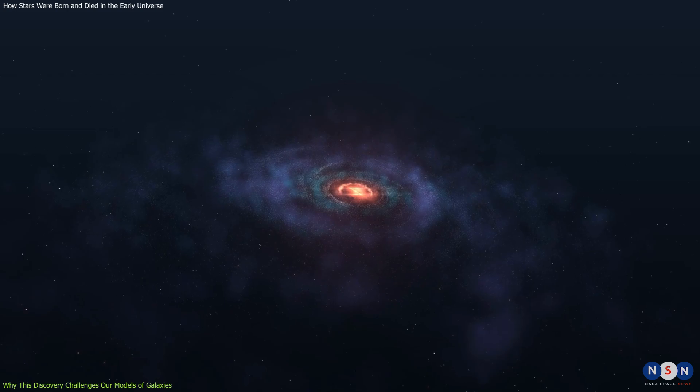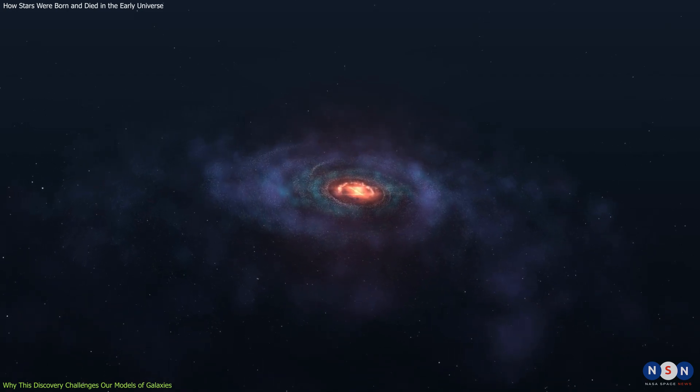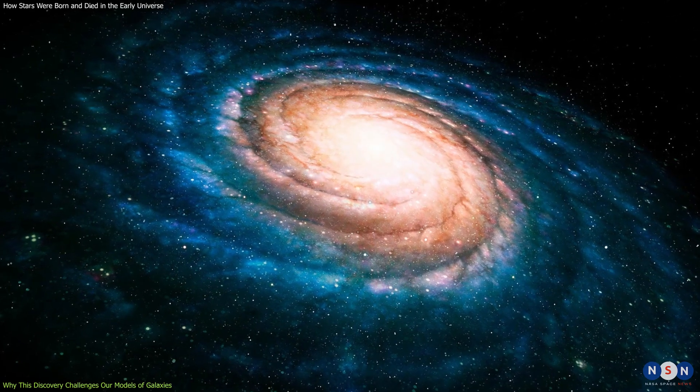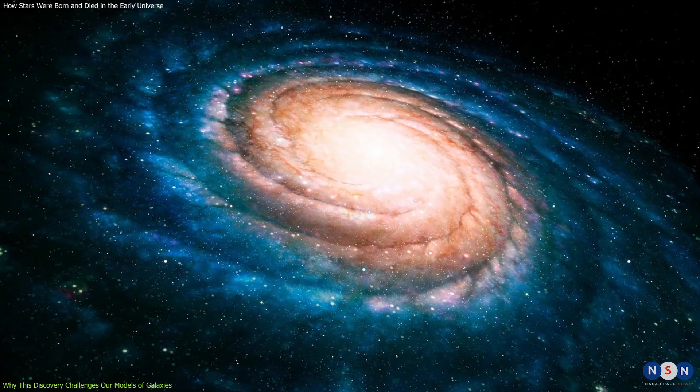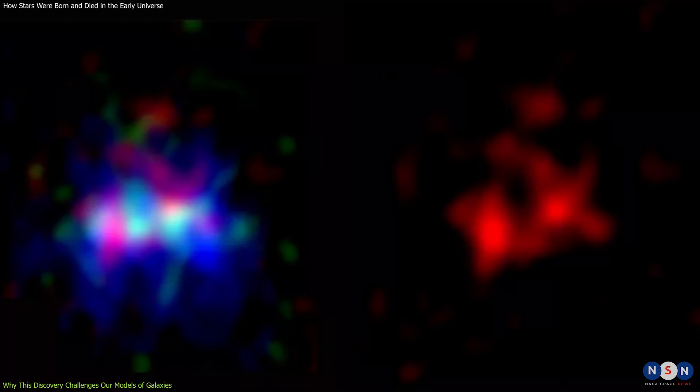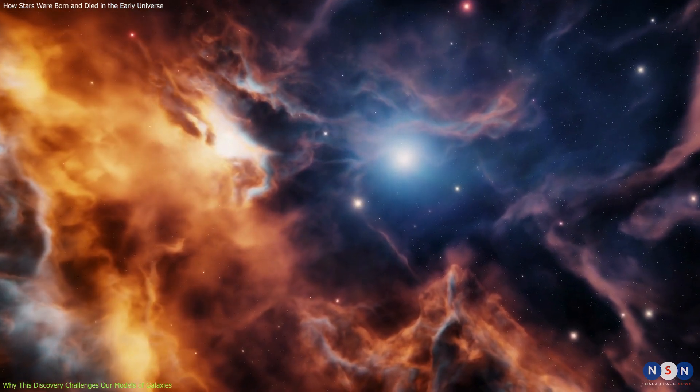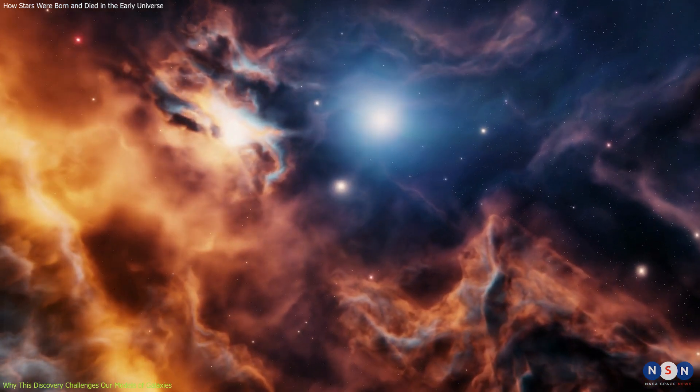For example, we expected that galaxies in the early universe would have less oxygen atoms and dust particles than galaxies in the present universe because they had less time to produce them. However, this galaxy seems to have a lot of them, suggesting that it was very efficient and fast at forming stars and recycling their material.